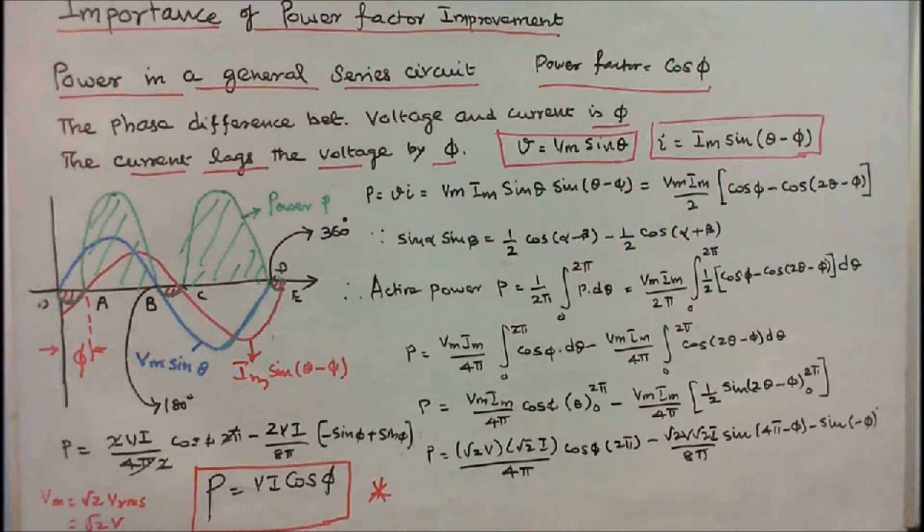Substitute the limits and simplify the equation. We know that maximum voltage is equal to √2 times Vrms, which equals √2 V times √2 I, that is equal to 2VI.